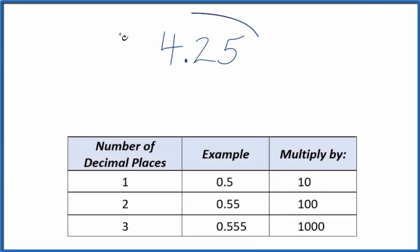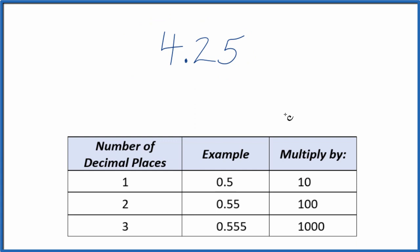Let's write the number 4.25 as a fraction. Starting out, let's call it 4.25 over 1. We're just dividing by 1, so it's still 4.25. Now we have the start of a fraction.